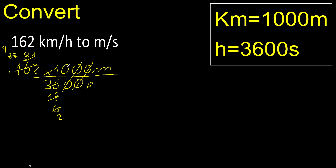Then 2 can be divided by 2. Divided by 2 is 5. Divided by 2 is 1. 9 multiplied by 5 is 45. 45 divided by 1 is 45.